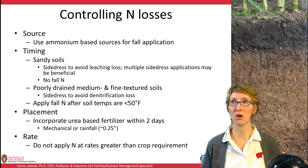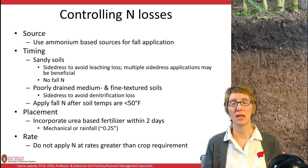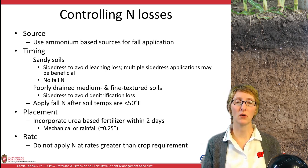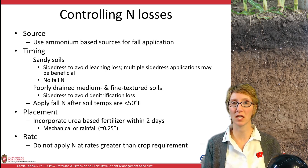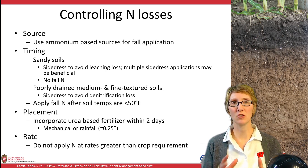When we think about controlling losses, rate is also a factor. You do not want to apply nitrogen at rates greater than what the crop is going to use, because if the crop is not going to use it, it's going to be left over and it will get lost — that's a guarantee. So keep rates in a range that are going to be needed by the crop. Excess application is never useful for controlling N losses.